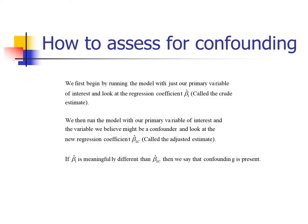The process looks like this: we first run the model with just our primary variable of interest and look at that regression coefficient — we call this the crude estimate. We then run the model with our primary variable of interest and the variable or variables that we believe might be confounders and look at the new regression coefficient — we call this the adjusted estimate. If the crude estimate is meaningfully different from the adjusted estimate, then we say confounding is present.